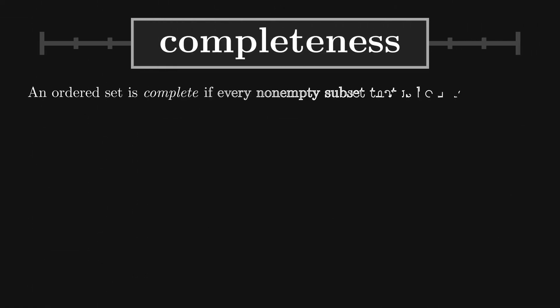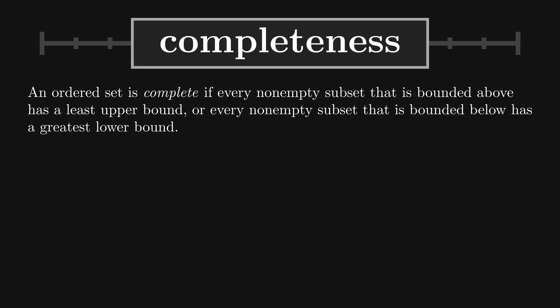An ordered set is complete if every non-empty subset that is bounded above has a least upper bound, or every non-empty subset that is bounded below has a greatest lower bound.